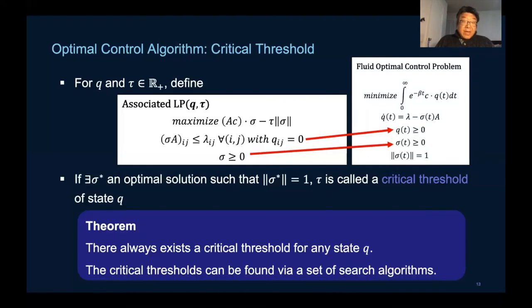Then we have our first result: there always exists such a critical threshold. In fact, the proof is a constructive one which we designed a set of search algorithms.